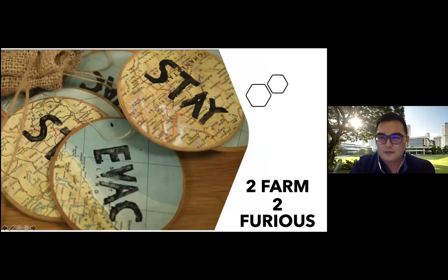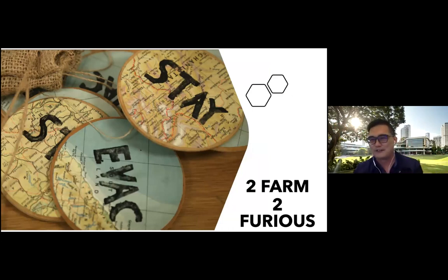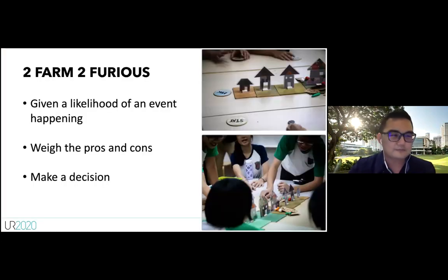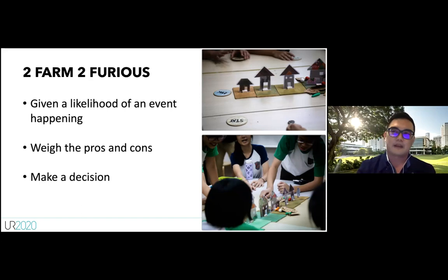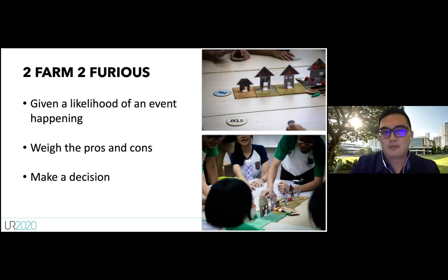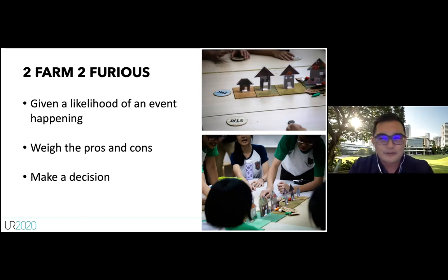The next game is called 'Two Farm Two Furious.' It explores the concept of probability or likelihood — something most people struggle with. For example, if there's a 60% chance of rain this afternoon and you're going out, will you bring an umbrella? Most people want a simple yes or no answer, but forecasting involves too many variables to be certain.